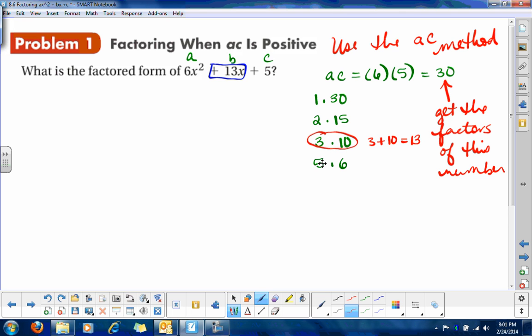All right. So now we're going to rewrite this 13x using 3x and 10x. Okay, so we've got 6x squared. Then we're going to rewrite the 13x. So that's going to be plus 3x plus 10x. And then write the rest of it, plus 5.